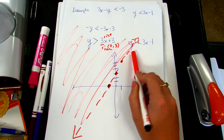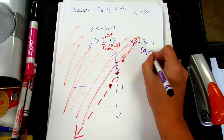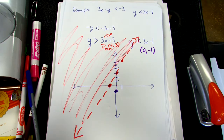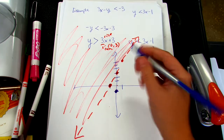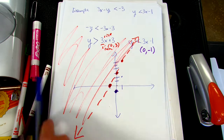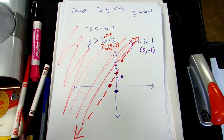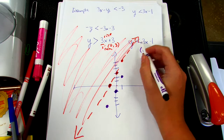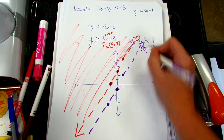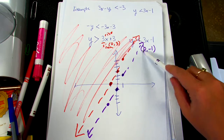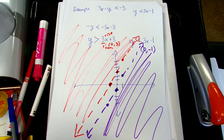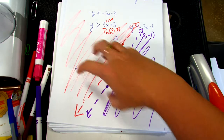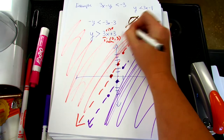For the next equation, the y-intercept is (0, negative 1). Plot that, then use slope 3 over 1: go up 3, run 1 for one point; go down 3, run 1 for another. Open or closed? It is open — dotted line. Above or below? It's below, because it's less than. Our answer should be where the two colors intersect, but if you notice, they don't intersect at all — they're parallel. So since they don't intersect, there's no solution. It's the empty set.